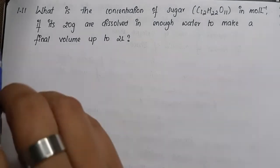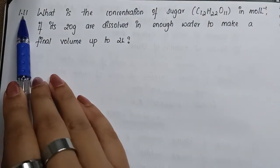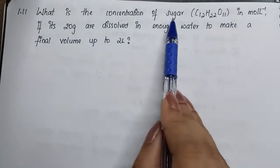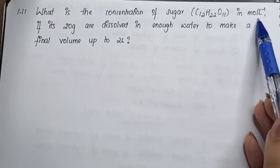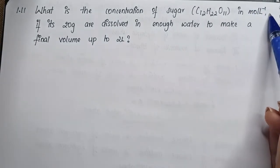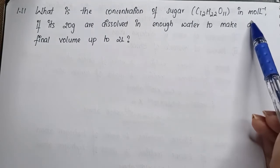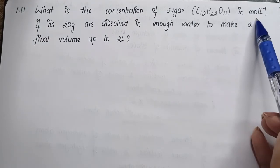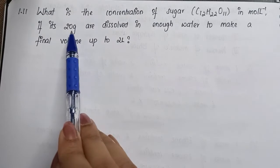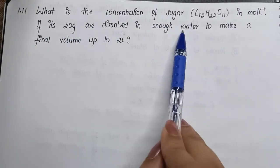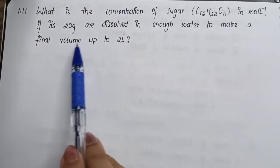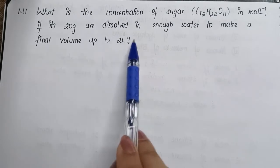Students, next question is 1.11: What is the concentration of sugar in moles per liter? This is a clue telling us we need to calculate molarity, because the SI unit for molarity is moles per liter. If 20 grams are dissolved in enough water to make a final volume up to 2 liters...